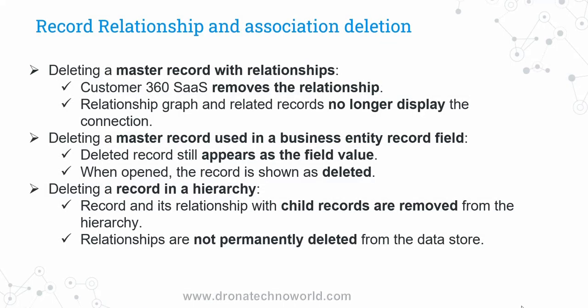These are a few important things about the master record. As we know, the master or business entity record is not an independent record — it can be associated with multiple objects such as relationships, other business entity records, or configured hierarchies. Whenever we delete a master record within a relationship, Customer 360 SaaS removes that relationship, so we will not be able to see that relationship in the UI. The relationship graph and related records section will not show that relationship or those connections.